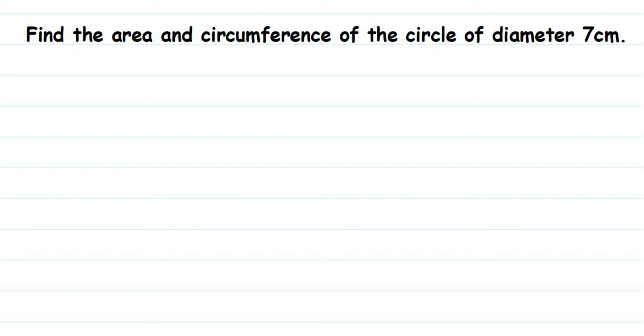Hello everyone, here is a question on circles. Find the area and circumference of the circle of diameter 7 centimeters. So we have given the diameter, not the radius. We have d = 7 centimeters, and we have to find out the area and circumference.